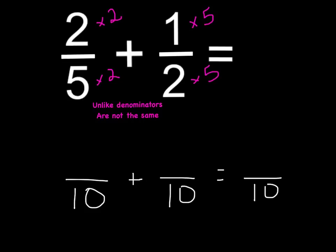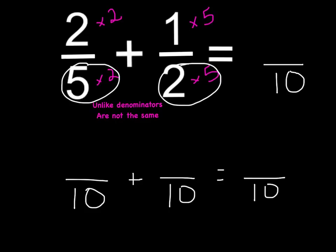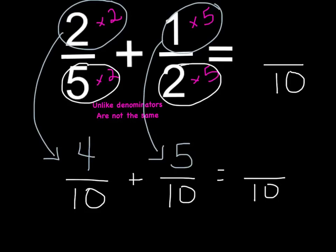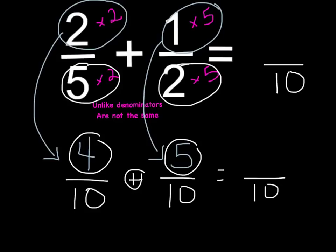We can go ahead and put 10 as our common denominator all the way across, because we never ever ever add the bottom. 5 times 2 is 10 and 2 times 5 is 10, so we just leave 10 as our denominator for the answer. Next we multiply the numerators: 2 times 2 is 4, which goes as the numerator of the first fraction. 1 times 5 is 5, the numerator of our second fraction. Now that we have a common denominator, we can simply add the numerators. 4 plus 5 equals 9, so our fraction is 9 tenths.